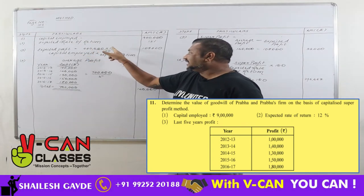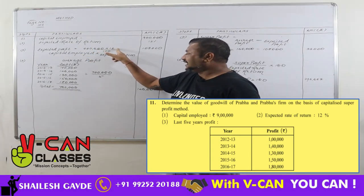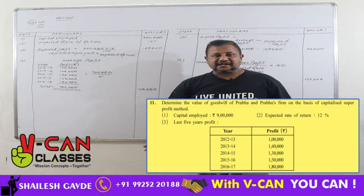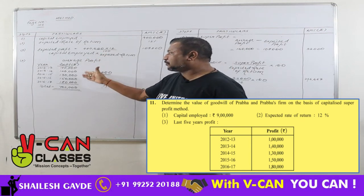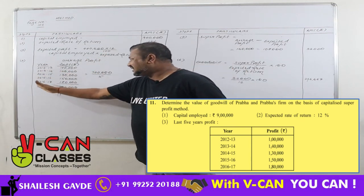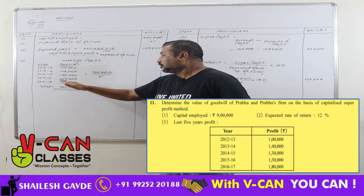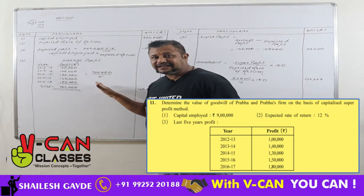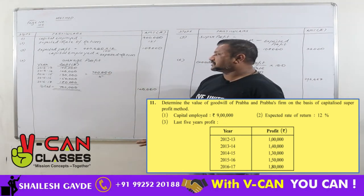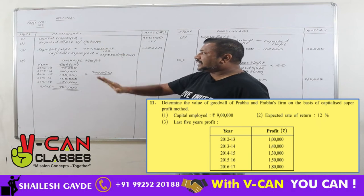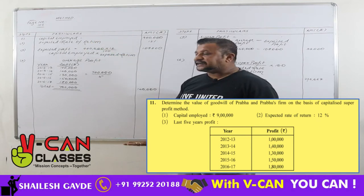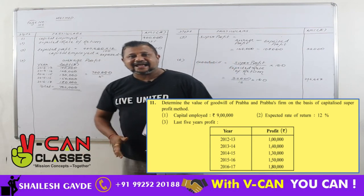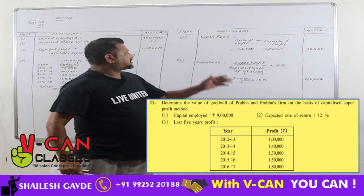Step 3: expected profit — capital employed into expected rate of return — that is 9 lakhs into 12%, which equals 1 lakh 8,000. Step 4: we calculate the average profit.